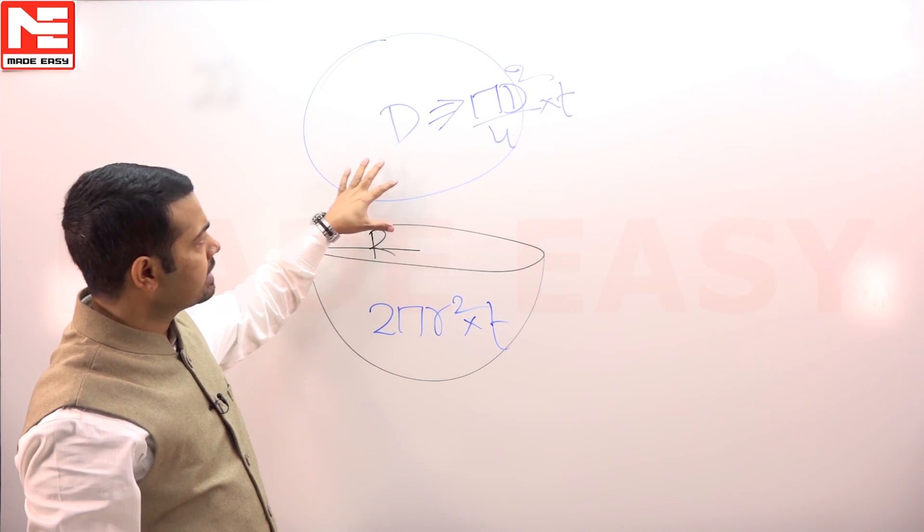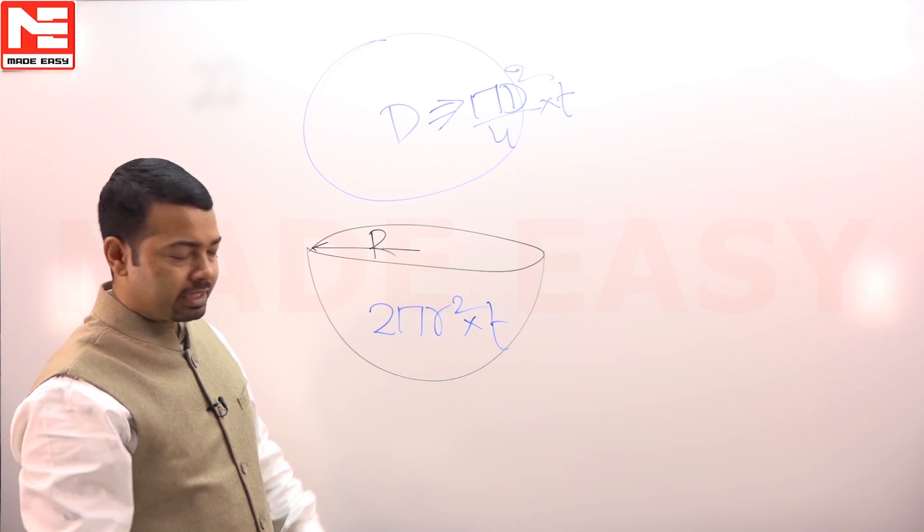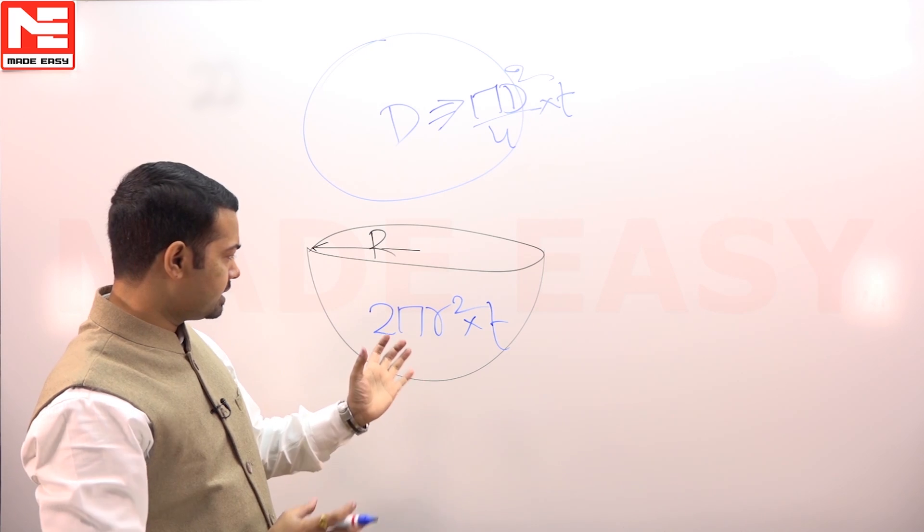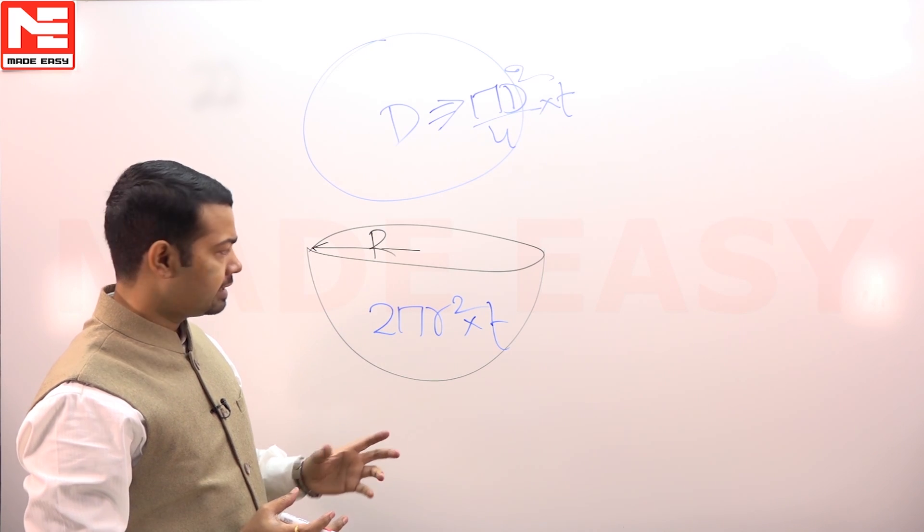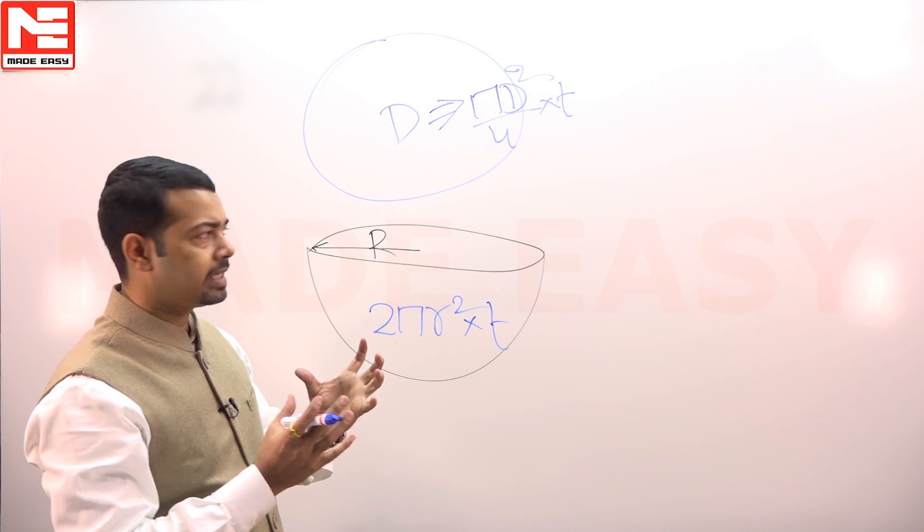In this disc, metal is πD²/4 × t. From this disc, if we produce this hemispherical container, then the metal will be 2πr² × t. The amount of metal will remain the same.